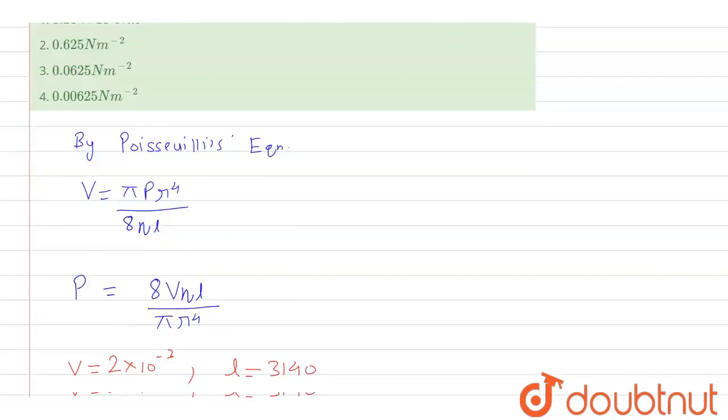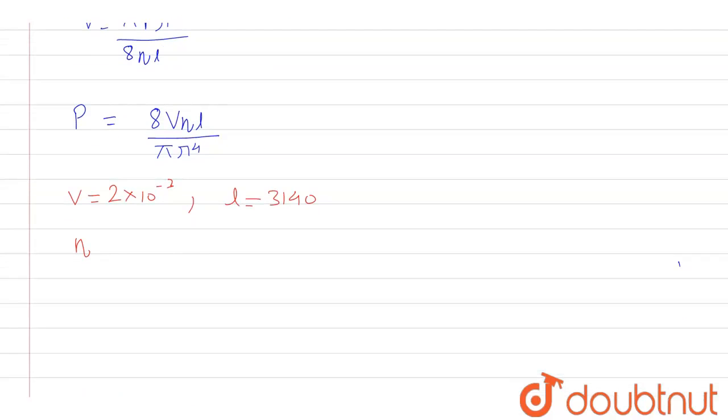Value of eta, that is coefficient of viscosity, is given as 10 raised to the power minus 3. And the diameter is given as 8 centimeter, that means radius is equal to 4 centimeter or radius is equal to 0.04 meter.